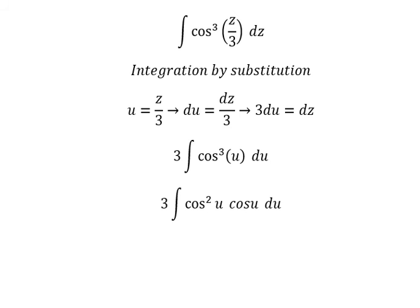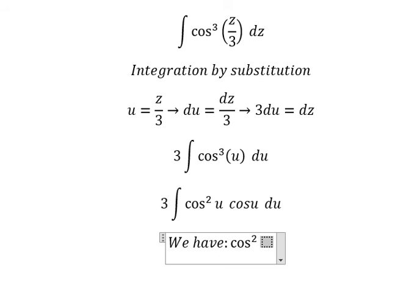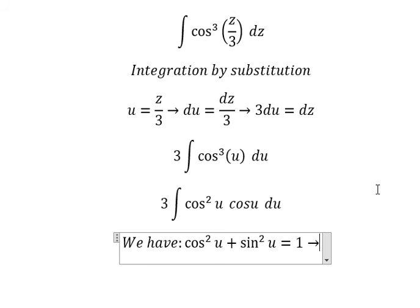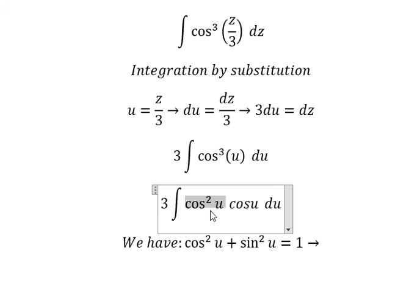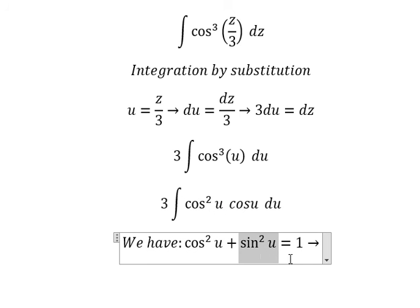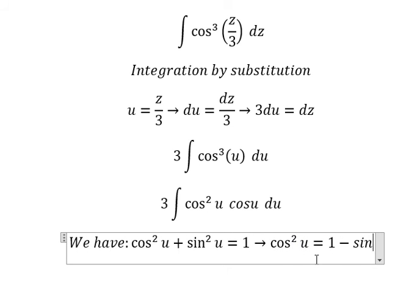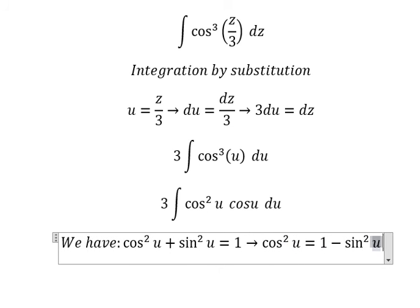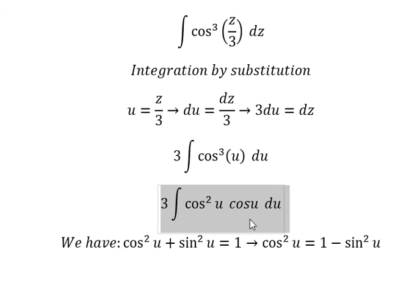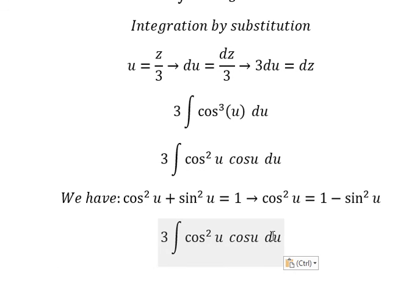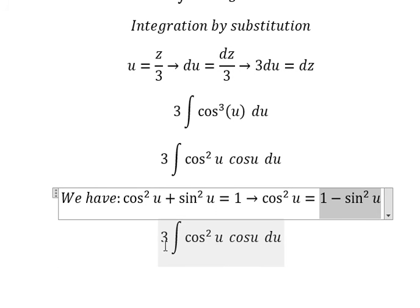Next we use the formula: cosine u squared plus sine u squared equals one. Because we have cosine u squared here, I need to move sine u squared to the right side. So we change cosine u squared into one minus sine u squared.